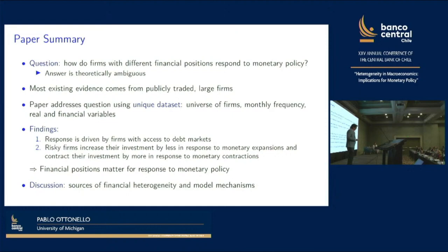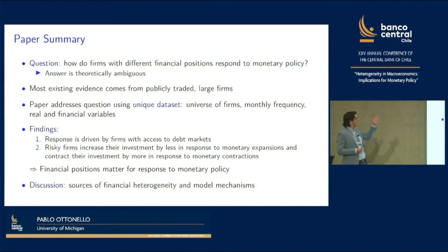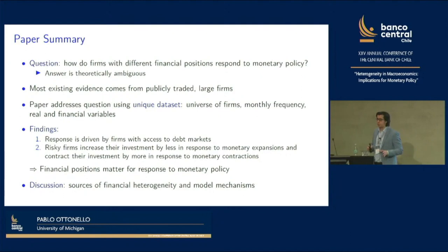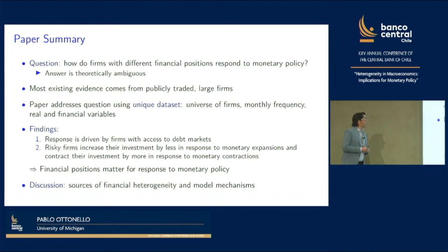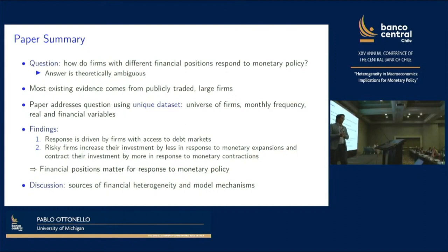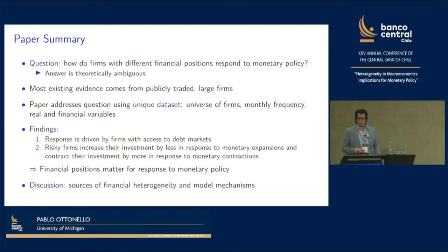It is very important to have evidence. Most of the current evidence comes from publicly traded large firms. One thing the paper does is use excellent data sets that cover the universe of firms, with high frequency that is important for monetary policy, and real and financial variables. When the paper says it has a unique data set, they really mean it — they can do very interesting work documenting these heterogeneous responses. The paper has many findings. Let me highlight two: first, the response is driven by firms with access to debt markets; and second, risky firms increase their investment by less in response to monetary expansion and contract by more following monetary contractions. The overall takeaway is that financial positions matter for the response to monetary policy.